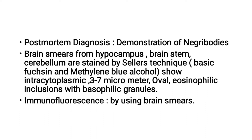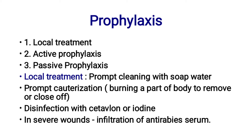Seller's stains are mainly used for the demonstration of Negri bodies. The next method is the immunofluorescence technique using brain smears. Prophylactic measures for control of Rabies Virus include: local treatment, proper cleaning with soap and water, proper cauterization of the wound, and disinfection with cetrimide or iodine.